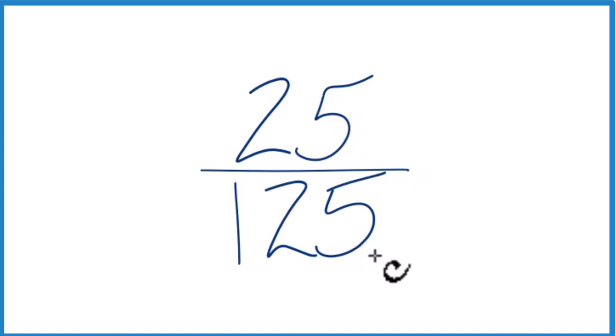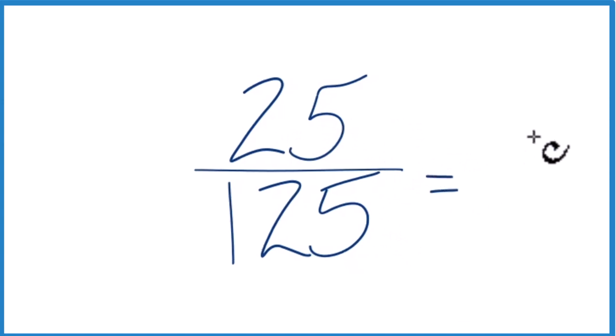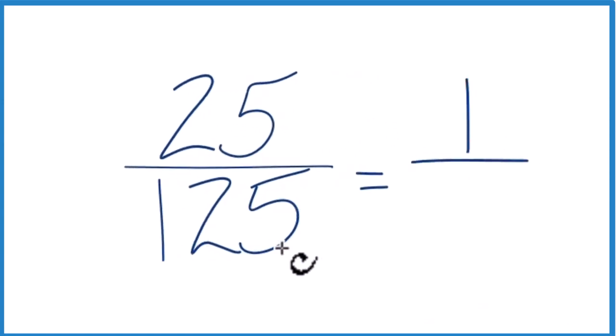So if we divide 25 by 25, we get one. If we divide 125 by 25, we get five. So we can simplify the fraction 25 over 125 down to one-fifth. We can't simplify this any further.